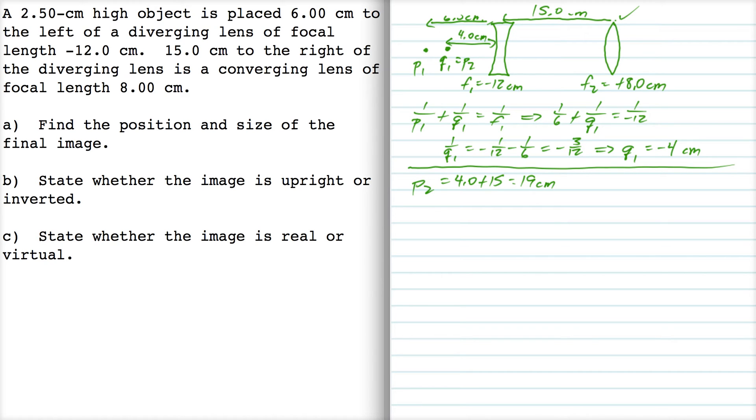So we have 1 over P2 plus 1 over Q2 is 1 over F2. So 1 over 19 plus 1 over Q2 is equal to 1 over 8. So 1 over Q2 is 1 over 8 minus 1 over 19, which I'm going to just use decimals here, 0.074. And so if I invert that, Q2 is positive 13.8 cm.